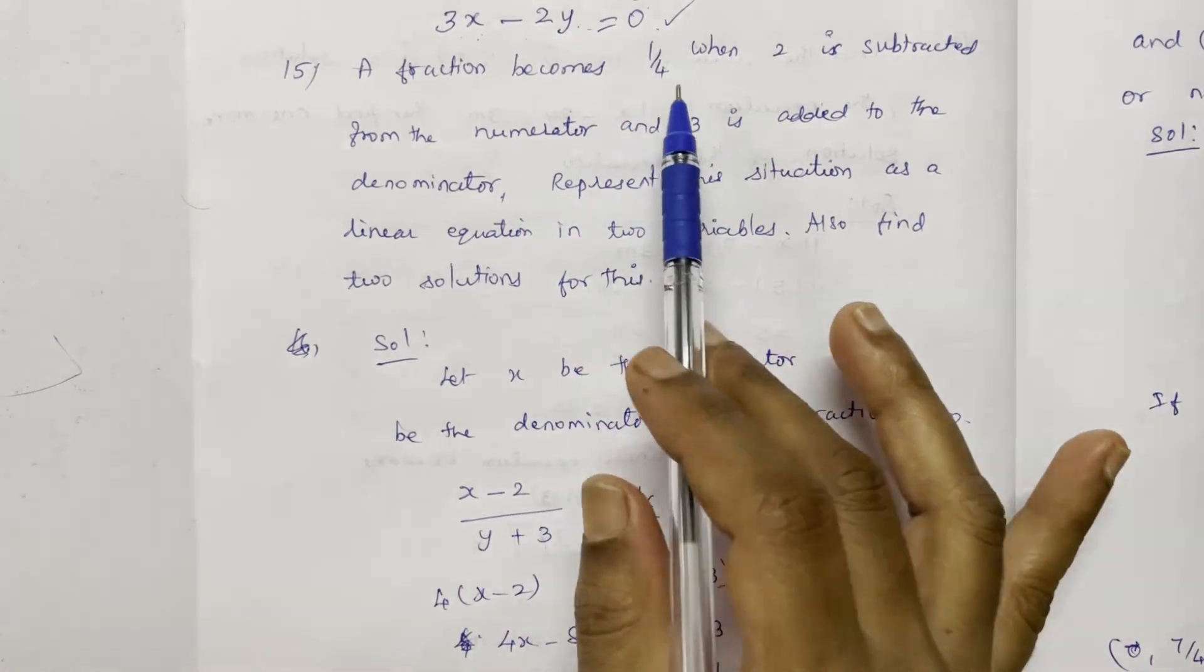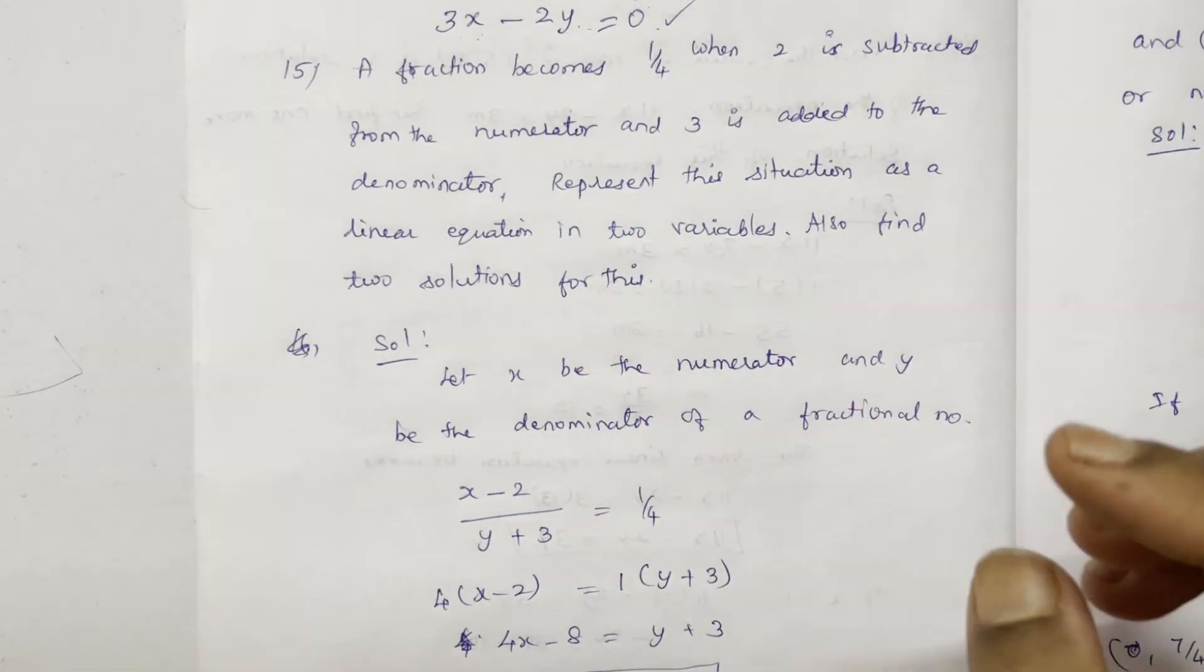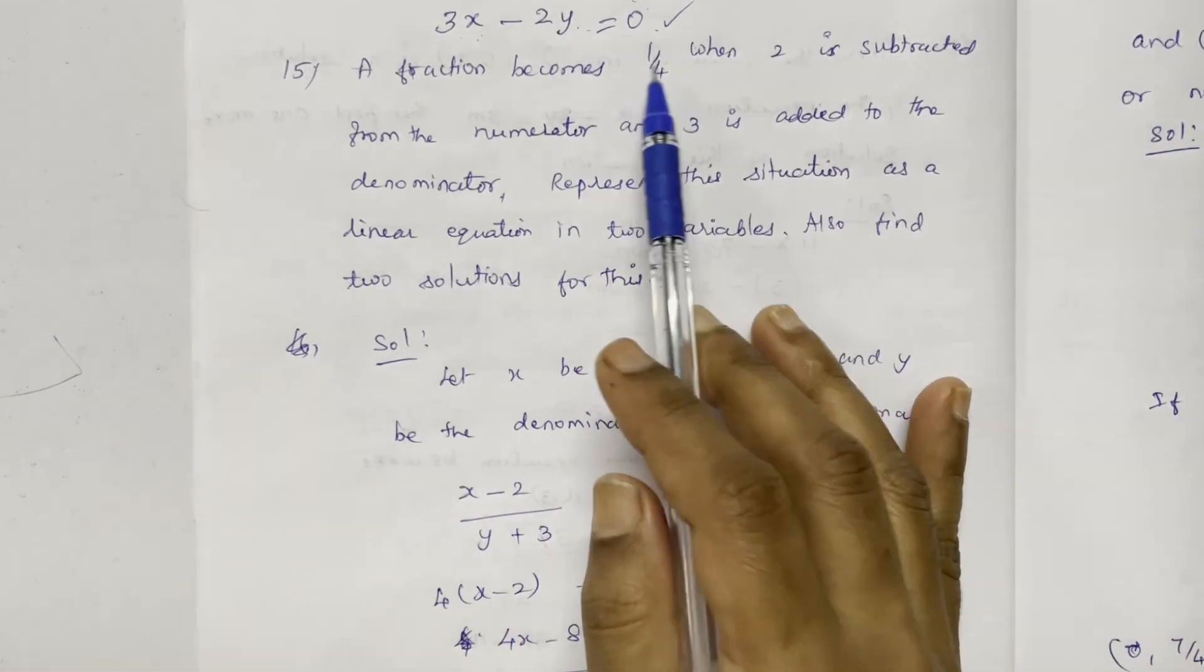If you have a fraction, let x be the numerator and y be the denominator, then the answer is 1 by 4.